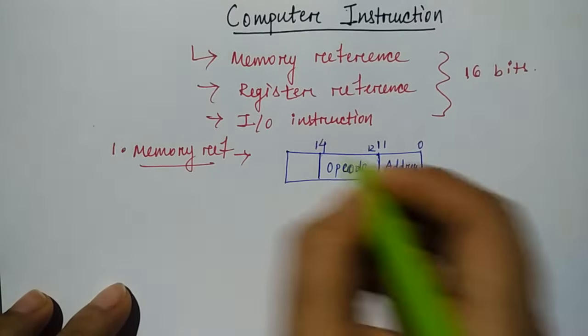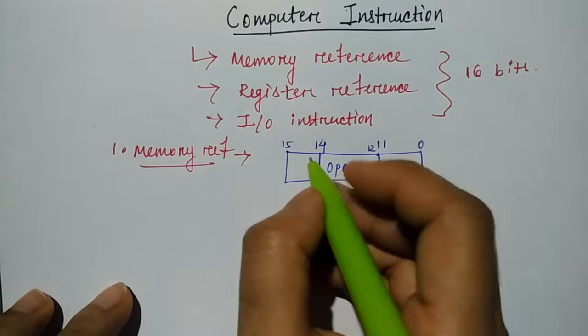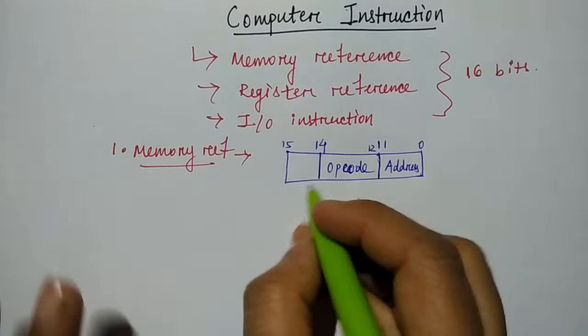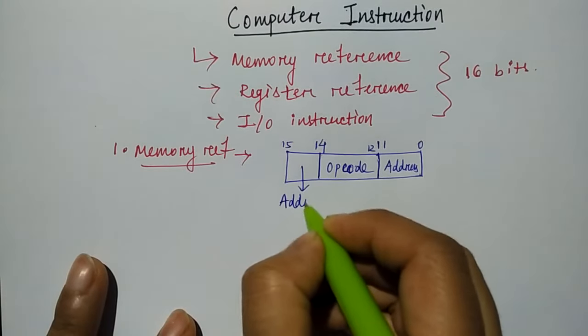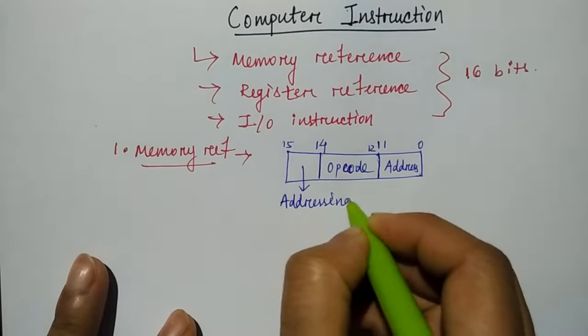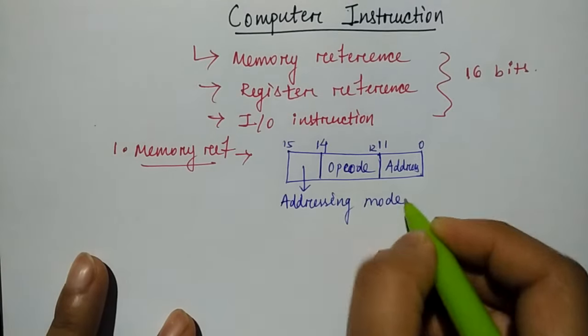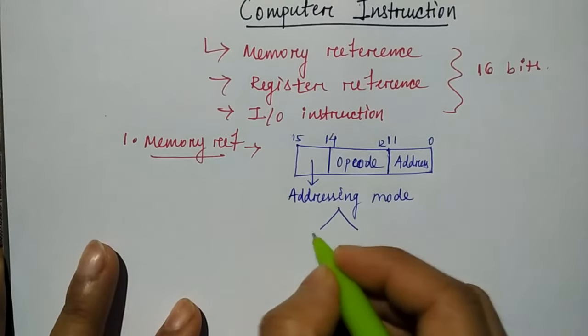And after 14 to 15, 1 bit. That 1 bit is for addressing mode. Okay? Here you store your addressing mode. So how do you know which addressing mode is? This is again of two types.